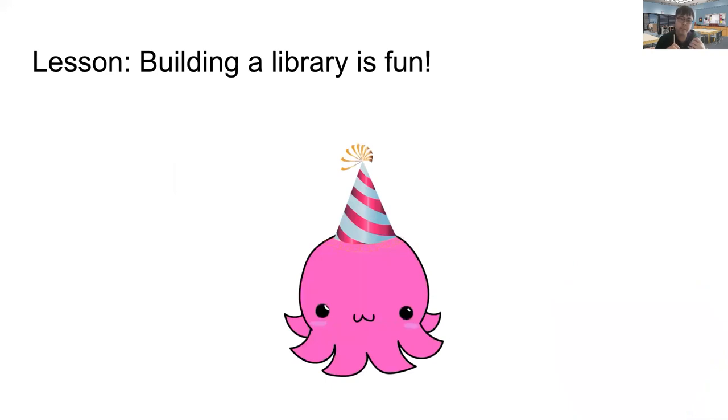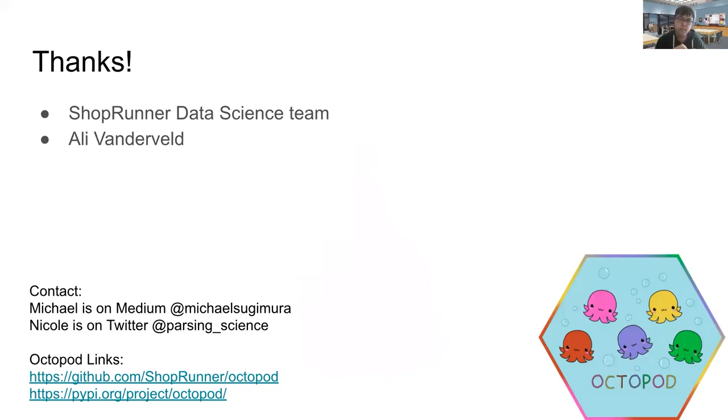And then one other lesson that we have is that it's a super fun rewarding experience to work with, for Nicole and I to work with someone who has opposite strengths from ourselves. And really making this library together is something that once we figured out how to collaborate well together, it's something we were able to make that really neither of us could have made on our own. And it kind of reinforced that lesson that it's fun and rewarding to work with people very different from you because that is really how you end up growing as a software engineer or data scientist just as a person, getting exposed to those new ways of thinking. So to wrap it up, we'd like to give a quick shout out and thanks to the ShopRunner Data Science team for allowing us to repeatedly nerd snipe them and for all their support. And also for the guidance of our former manager, Ali Vanderbilt. And then we have the contact information for Nicole and myself, my Medium handle and then Nicole's Twitter handle. And then once again, we have the links for the Octopod GitHub and PyPI links.